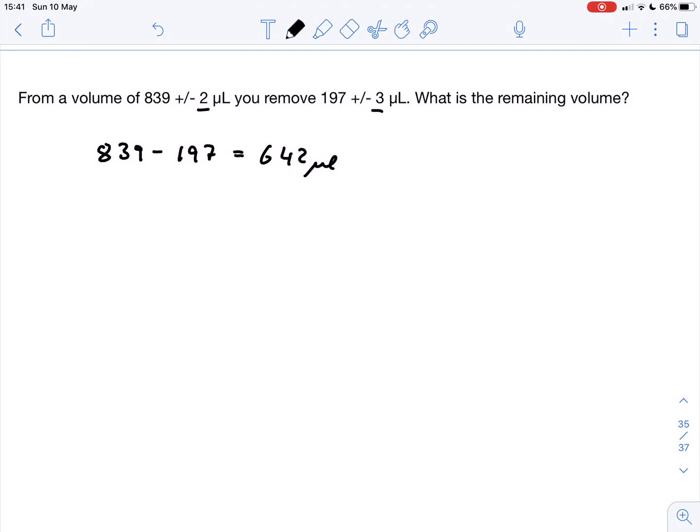Well, we can see these uncertainties as the sides of a triangle. For example, we've got 2 microliters here and 3 microliters here. And the uncertainty of the difference is nothing else but this side of the triangle.